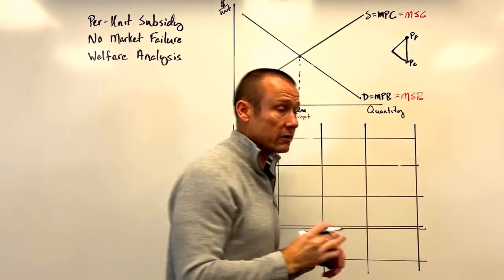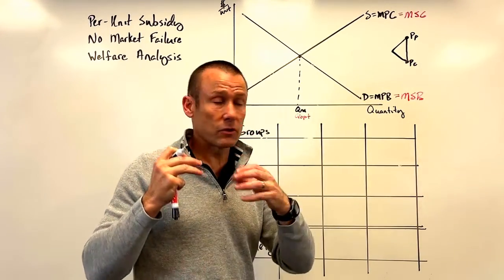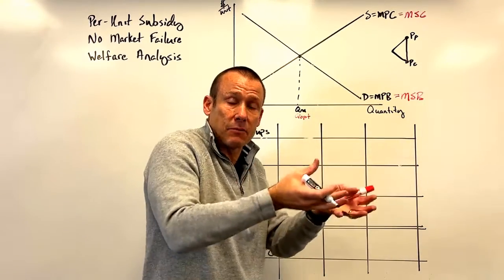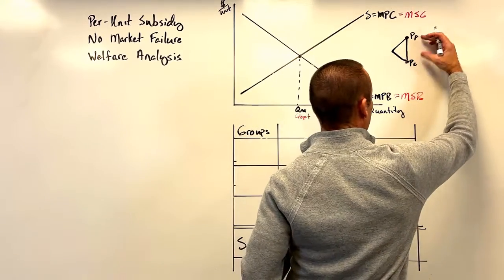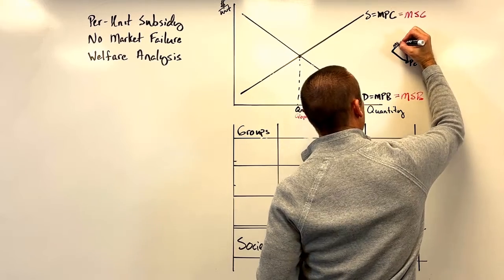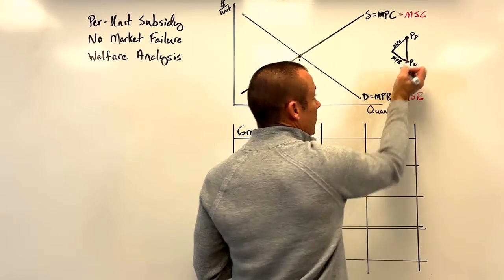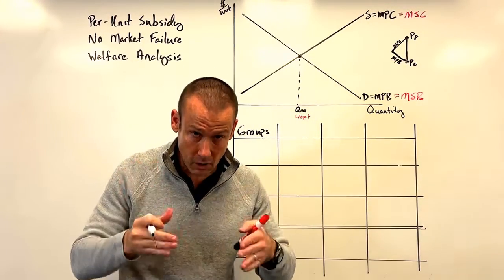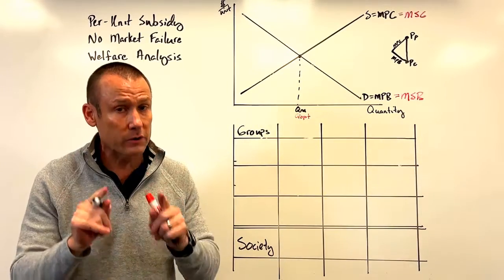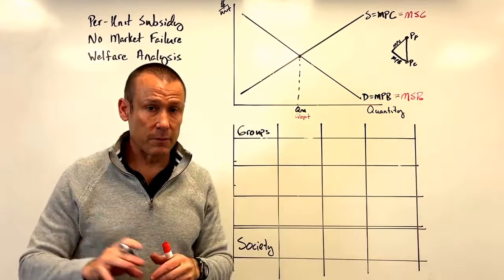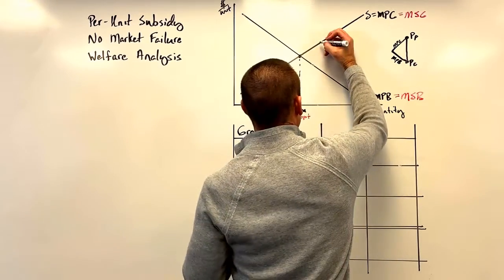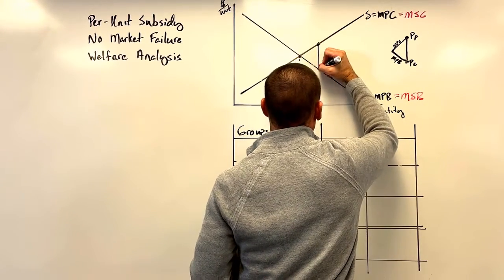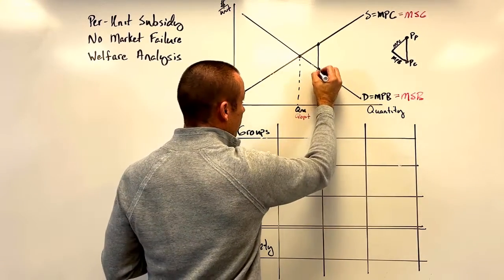The subsidy wedge separates Pp (price to producer) and Pc (price to consumer) by the amount the government provides to market participants — that is, the per unit subsidy. That vertical distance is the per unit subsidy. We always focus on the marginal private cost and marginal private benefit curves when bringing in a per unit subsidy or tax, because these are market-based interventions focused on supplier and demander decisions.